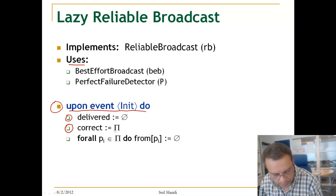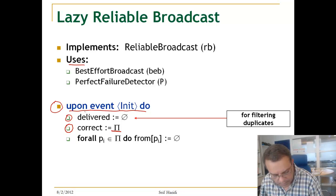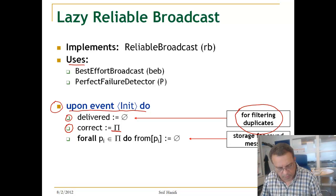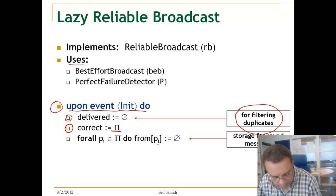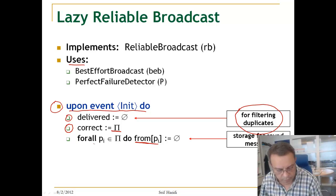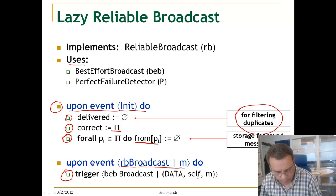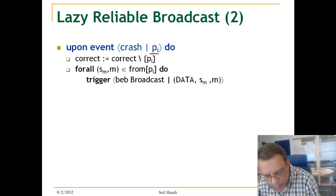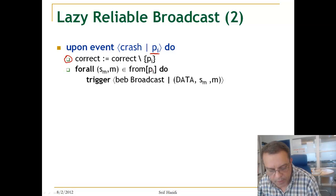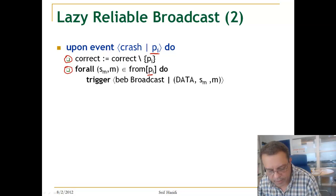Here is the initialization procedure. We have a set called 'delivered' to remember messages that have been delivered to the application, used for filtering duplicates. We have the initial set of correct processes, called pi. We also have an array or map that for each process pi stores the messages that have been received from pi. Initially, for each process pi, the value is the empty set — no message has been received. When the reliable broadcast gets a reliable broadcast request, it triggers a best-effort broadcast with the message, with itself as sender, and a 'Data' tag. Whenever process pi has crashed, it removes pi from the list of correct processes and resends all the messages it has received from pi, stored in from[pi], by triggering a best-effort broadcast for each message.